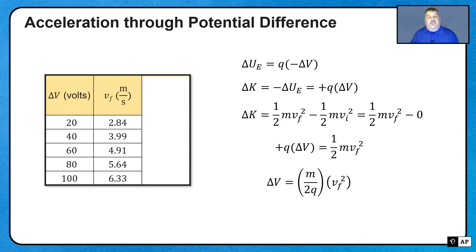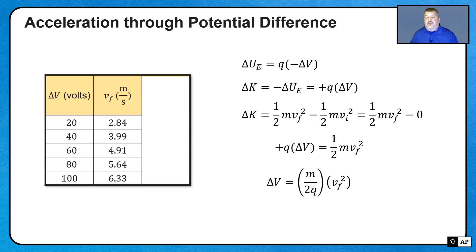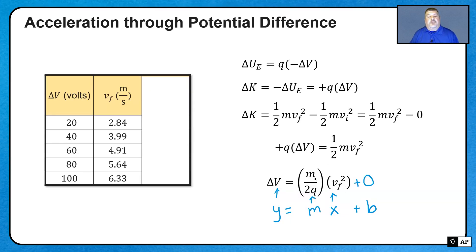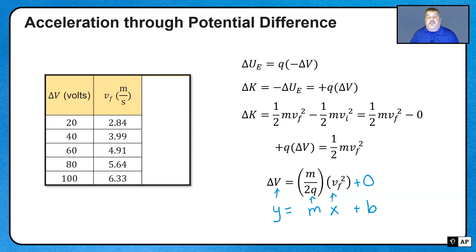This is the relationship between the potential difference and the final speed, and we want to graph it to get a linear relationship where the slope can be used to calculate a quantity. This looks like the equation of a straight line: if we put potential difference ΔV on the vertical axis and speed squared on the horizontal axis, then the slope of the line is the mass divided by two times the charge. This also has a vertical intercept of zero, because when ΔV equals zero, the final speed also equals zero.